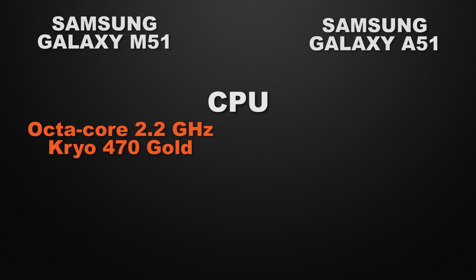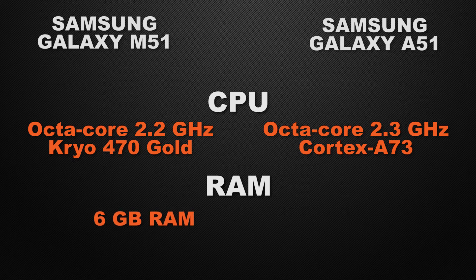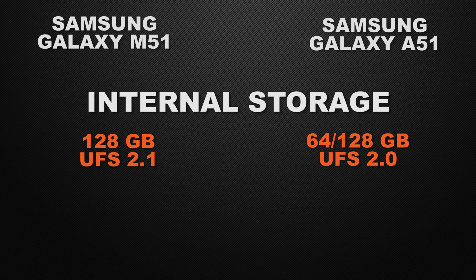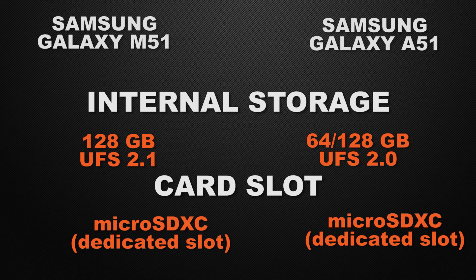For clock speed, the M51 can clock at 2.2 GHz based on octa-core Kryo 470 cores, and the A51 can clock at 2.3 GHz based on octa-core Cortex A76 — so A51 wins as it clocks faster. For RAM, the M51 has 6 GB and the A51 has 4, 6, and 8 GB options, so A51 wins with more options. For internal storage, the M51 has 128 GB UFS 2.1 and the A51 has 64 and 128 GB UFS 2.0, so M51 wins with faster read and write speeds. Both devices have a microSD card slot, so it's a tie.